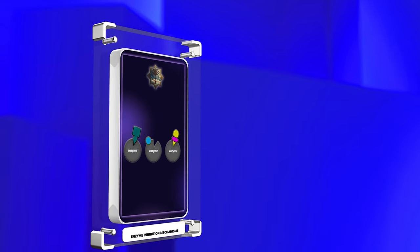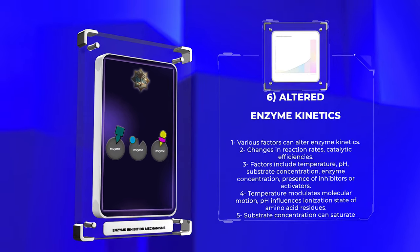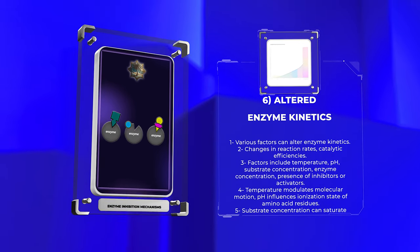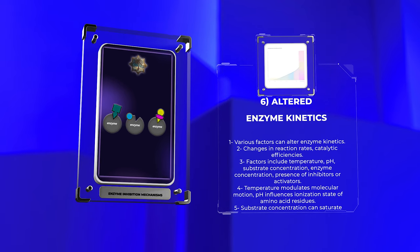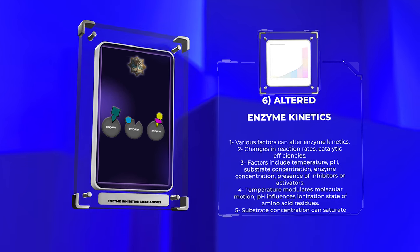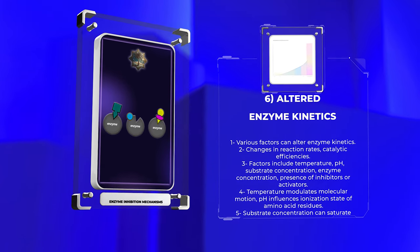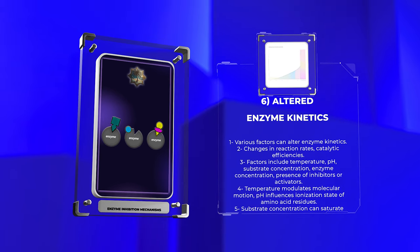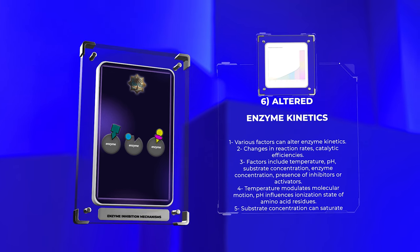Various factors can alter enzyme kinetics, leading to changes in reaction rates and catalytic efficiencies. These factors include temperature, pH, substrate concentration, enzyme concentration, and the presence of inhibitors or activators. Temperature affects enzyme activity by modulating molecular motion, while pH influences the ionization state of amino acid residues critical for catalysis. Substrate concentration can impact enzyme kinetics by saturating the active site or exhibiting allosteric behavior.